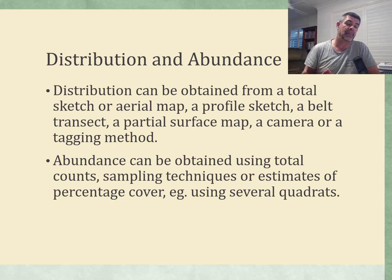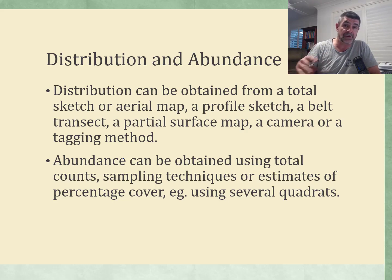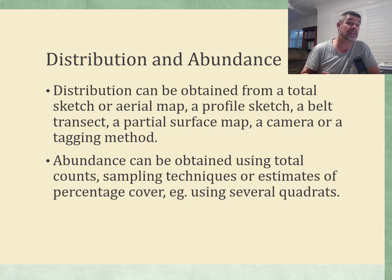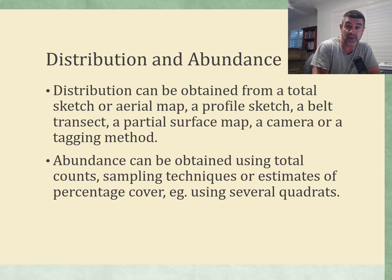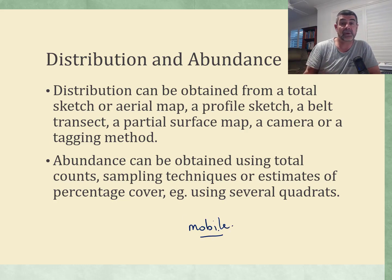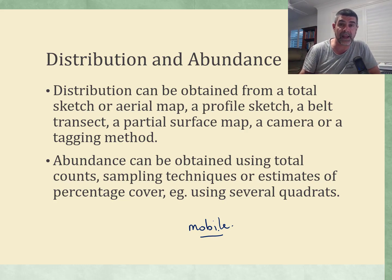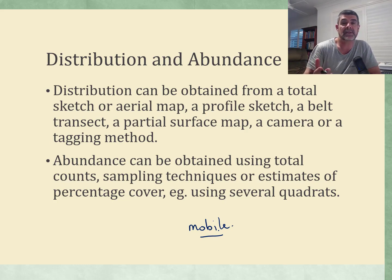We have a number of different sampling techniques we can use to determine where different types of species are found in an ecosystem and to get a rough idea of the actual numbers of species. The technique we use depends on whether they are mobile or not. Most animals, for example, are mobile and will move throughout the course of the day from one place to another.